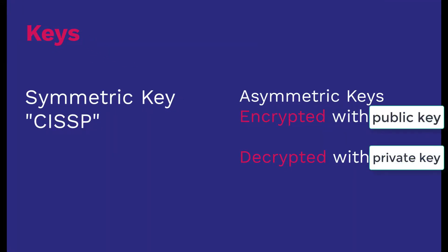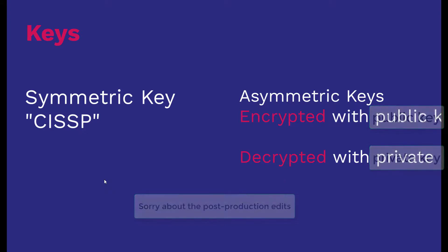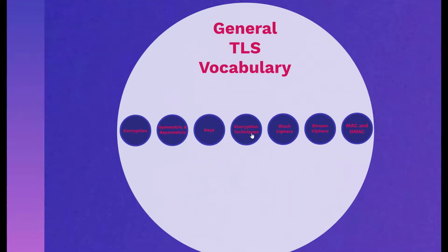Speaking of public, private, and symmetric keys — you have to know the concept of keys. It's like keys to a door: only the right one opens it. Our symmetric key in the previous example was 'CISSP,' and our asymmetric keys worked by encrypting with the public key and decrypting with the private key. Keys are what attackers are trying to figure out.